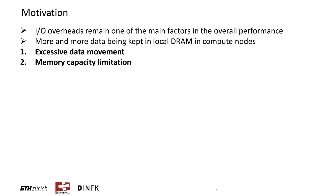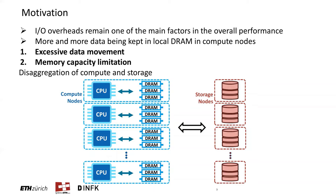Secondly, memory capacity is also a limitation. DRAM is expensive, and provisioning it independently for every node can be quite costly and difficult. An alternative approach is to exploit the distributed nature of databases, especially in cloud environments, where it is very beneficial to disaggregate resources to independently provision each of them. The step we're proposing in Farview is to additionally disaggregate compute and memory as well.